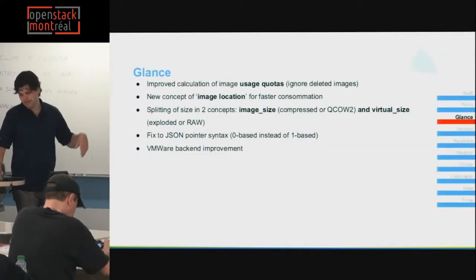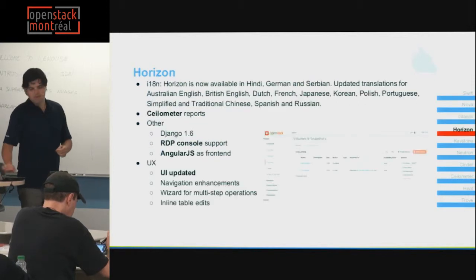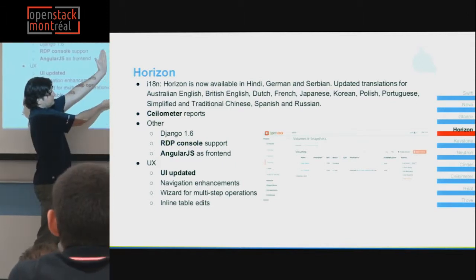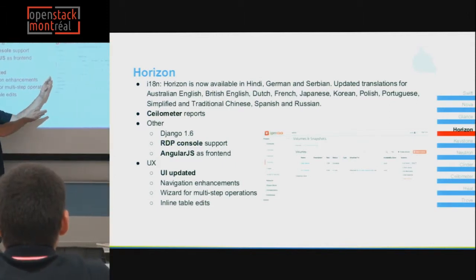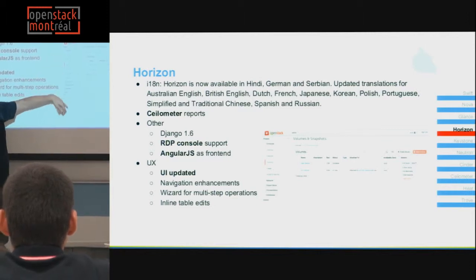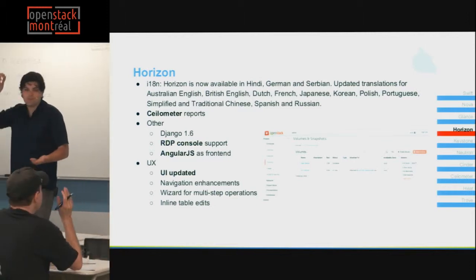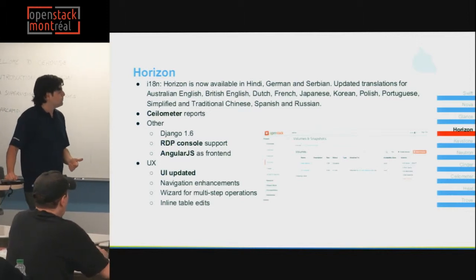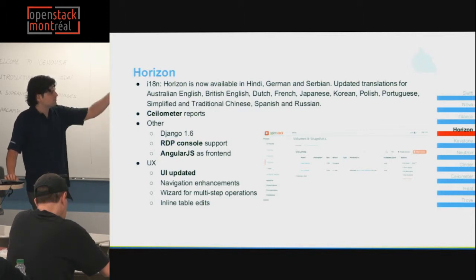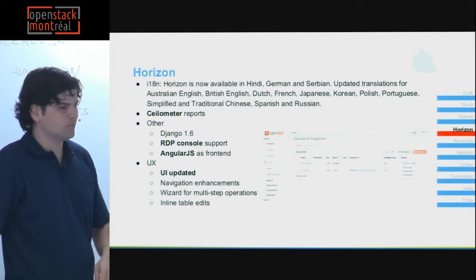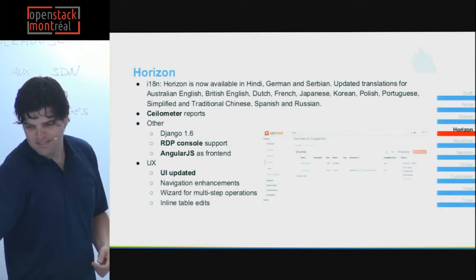They also improved the VMware backend. Horizon is the graphical interface — a simple website with buttons on the left; you click and request. They've improved it, as in every release. Nothing really incredible, but Spanish is now a language option, along with Dutch, Korean, and other translations.